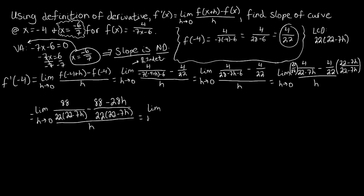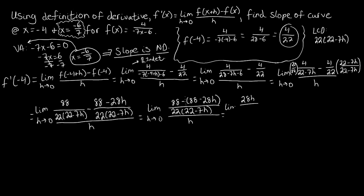Now we combine the numerators. Distributing the negative sign into the parentheses gives us 88 minus 88 plus 28h. The 88 terms cancel, leaving just 28h in the numerator. So we have the limit as h approaches 0 of 28h over 22 times 22 minus 7h, all over h.